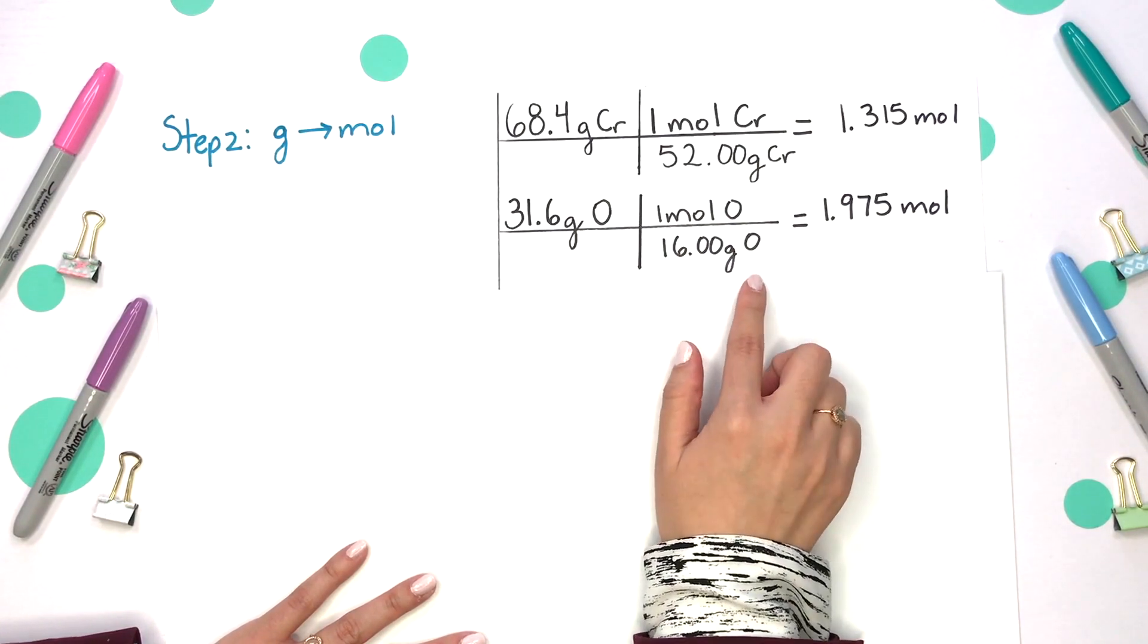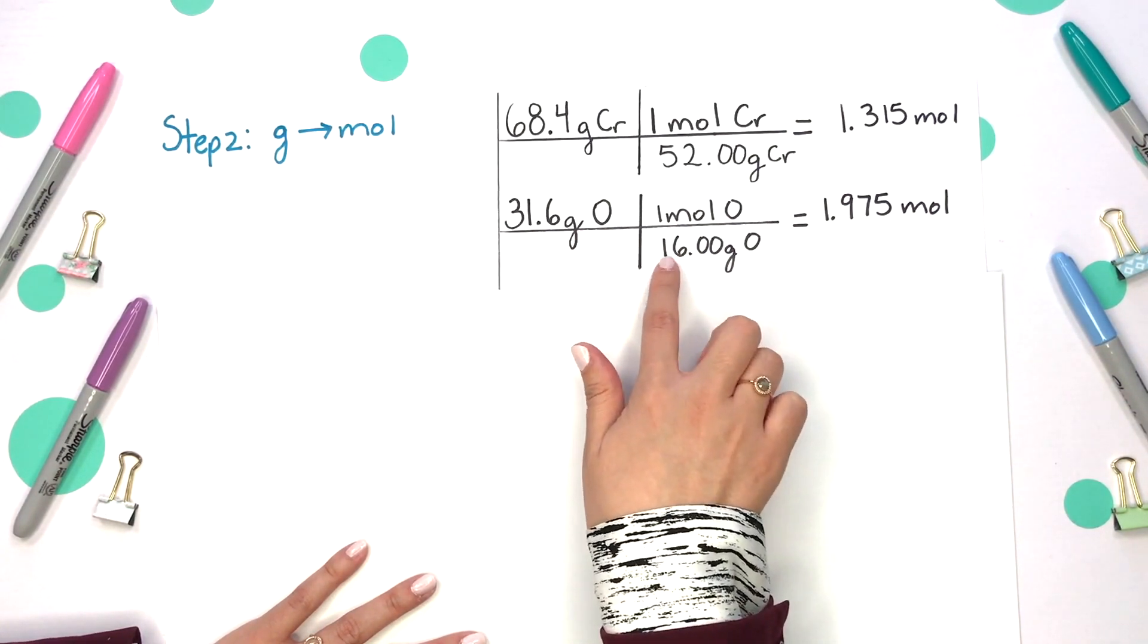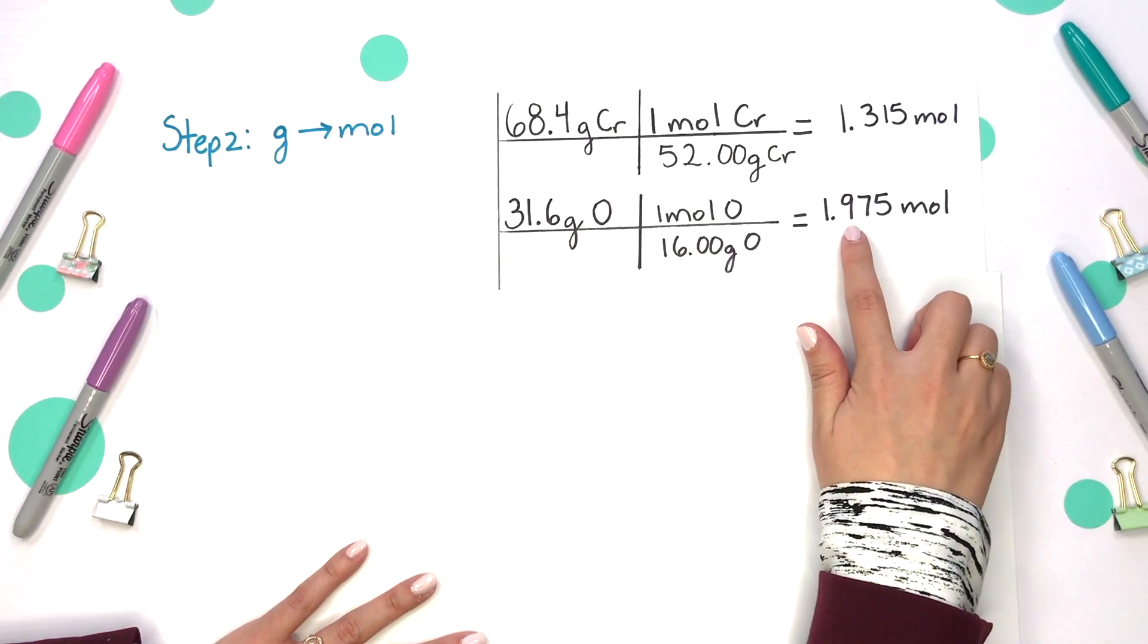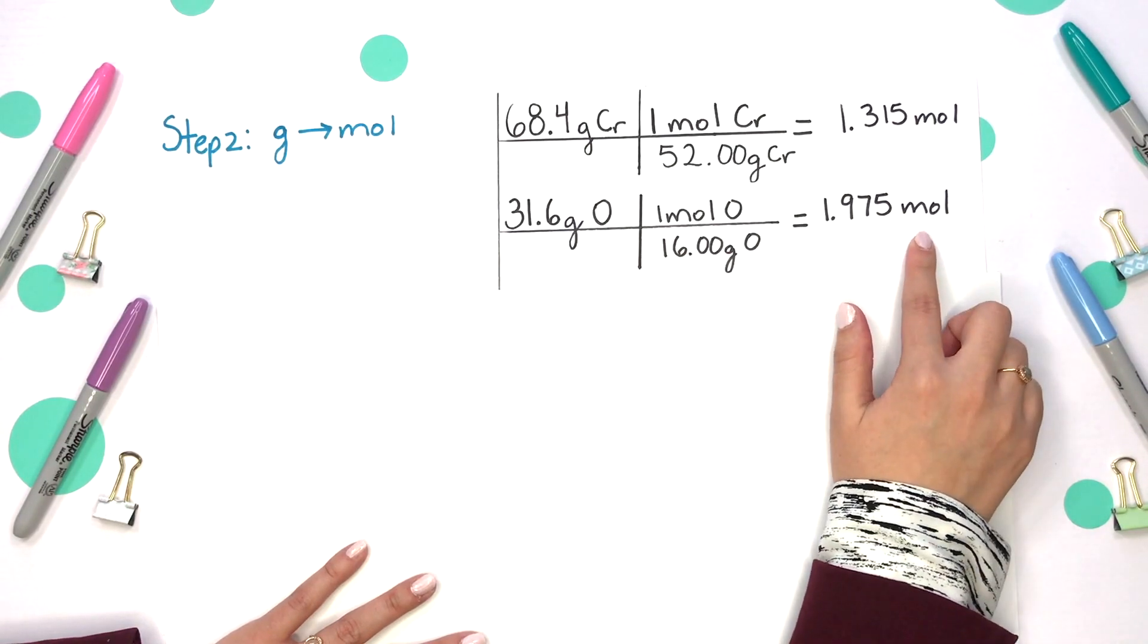Do the same exact thing with oxygen's molar mass. Divide these two values and we'll get 1.975 moles of oxygen.